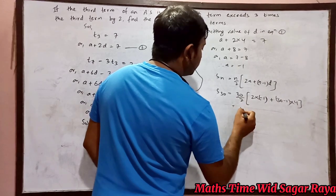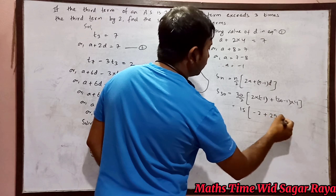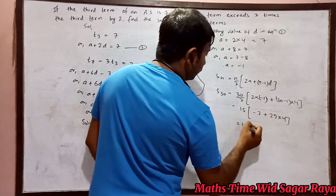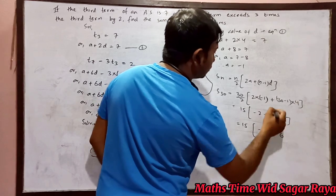So 30 by 2 is 15. So 15 times (minus 2 plus 29 times 4). 30 minus 1 is 29 times 4. So 15 times (minus 2 plus 116).